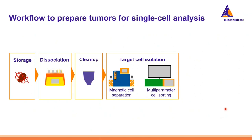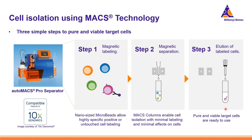Once we have our cell suspension nicely cleaned up, we might need to also isolate certain cell types such as TILs. This can be performed by applying either magnetic cell separation or multiparameter cell sorting. We heard how we can isolate different target cells using MACS technology in three easy steps. Besides performing these steps manually, it's possible to run the steps completely in a fully automated way using the autoMACS Pro Separator. This technology is also compatible upstream with the 10X Genomics platform.